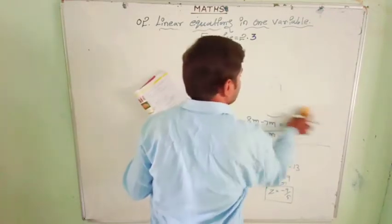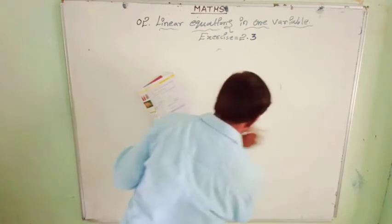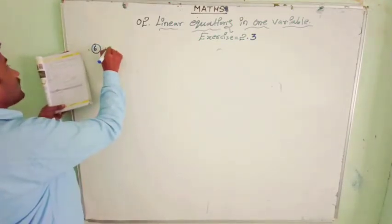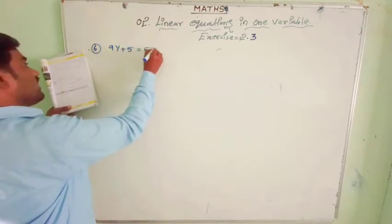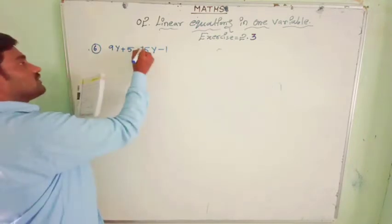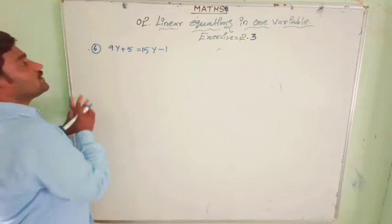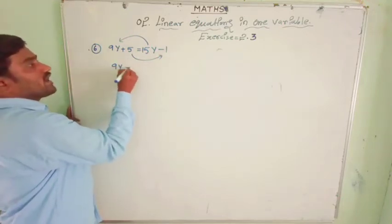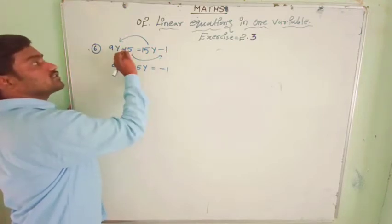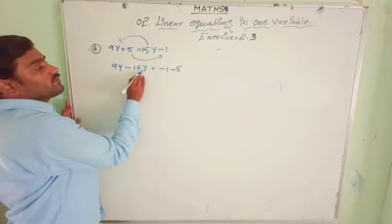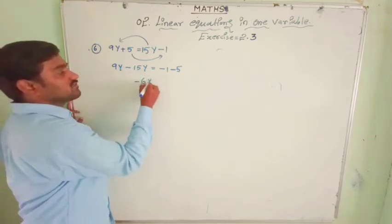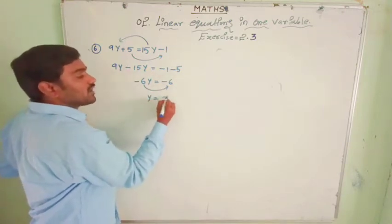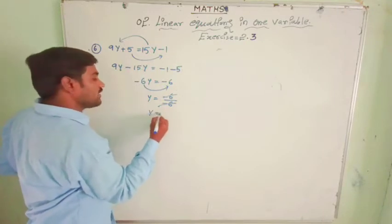Five problems are completed. Now let us solve 6 onwards. Problem 6: 9y plus 5 equal to 15y minus 1. 15y will transfer to this side and plus 5 will transfer to this side. 9y minus 15y equal to minus 1, and plus 5 becomes minus 1. 9 minus 15 is minus 6y, equal to minus 6. Transferring minus 6 gives y equal to 1.